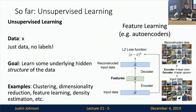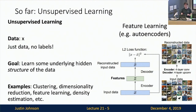In the last two lectures, we started talking about a different paradigm of machine learning: unsupervised learning. In unsupervised learning, you get no labels — you only get data — and the idea is you want to learn some underlying hidden structure of the data to be used for some downstream task. Some examples of unsupervised learning are things like clustering, dimensionality reduction, or any of the different types of generative models we talked about in the last two lectures.